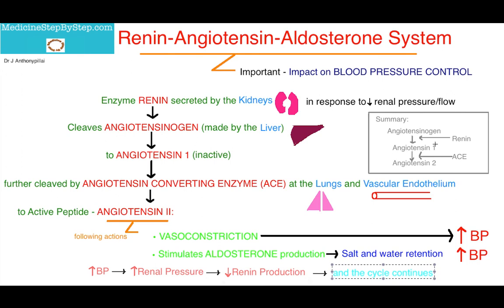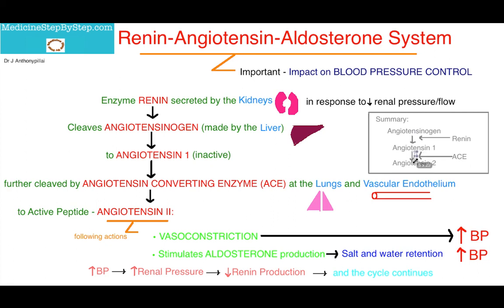So just to very quickly summarise the sequence of events in this pathway: you have angiotensinogen, which renin acts on to convert it to angiotensin-1, which ACE then acts on to convert it to angiotensin-2. So angiotensinogen becomes angiotensin-1 by renin, and angiotensin-1 becomes angiotensin-2 by ACE.